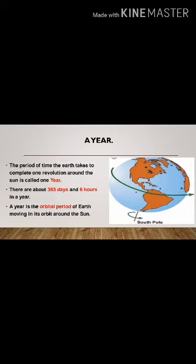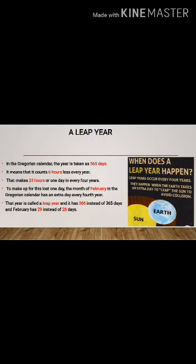There are 365 days and 6 hours in a year. A year is an orbital period of Earth moving in its orbit around the sun.